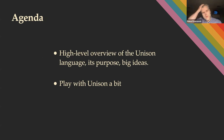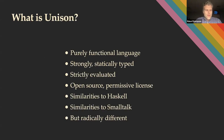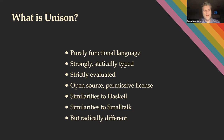I want to give you a high-level overview of the Unison language today - just the big idea, the purpose of this language, and we'll play around with it a little. Unison is a purely functional, statically typed language. It is strictly evaluated, similar to Java, Scala, or F#. It's open source - the compiler and runtime are written in Haskell. It's syntactically similar to Haskell and conceptually similar to Smalltalk, but radically different from both and from most other languages.